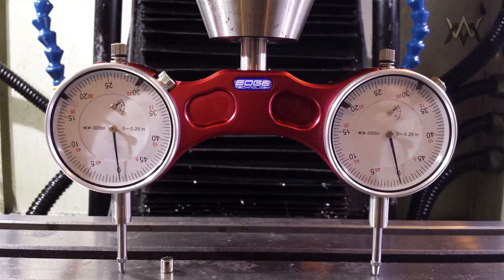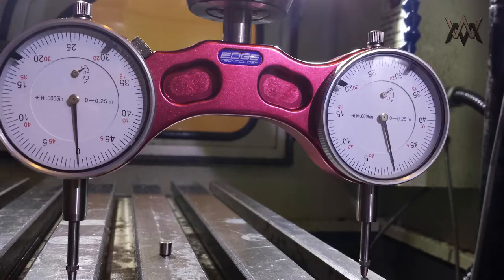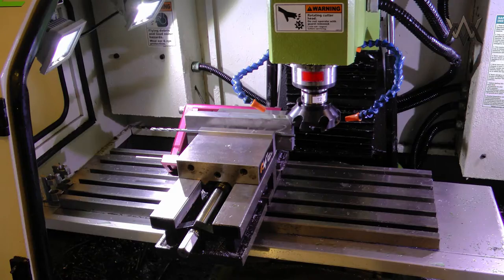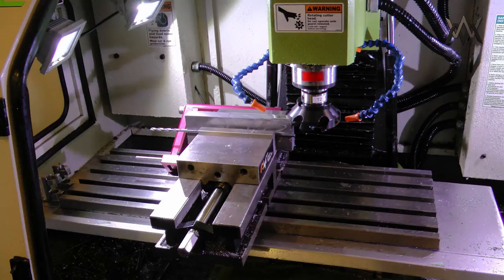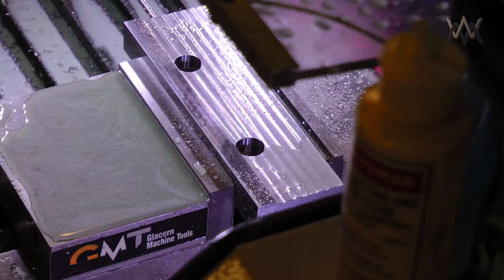Then I finish the interior of those vise bolt holes. Just the countersunk part. And again it just leaves a beautiful finish. Now I ran into an issue where I had to double check my tram. And I ended up getting it just right. That was the x-axis. This is the y-axis. It's pretty much perfectly square. I mean within a couple of tenths over six inches. If that.